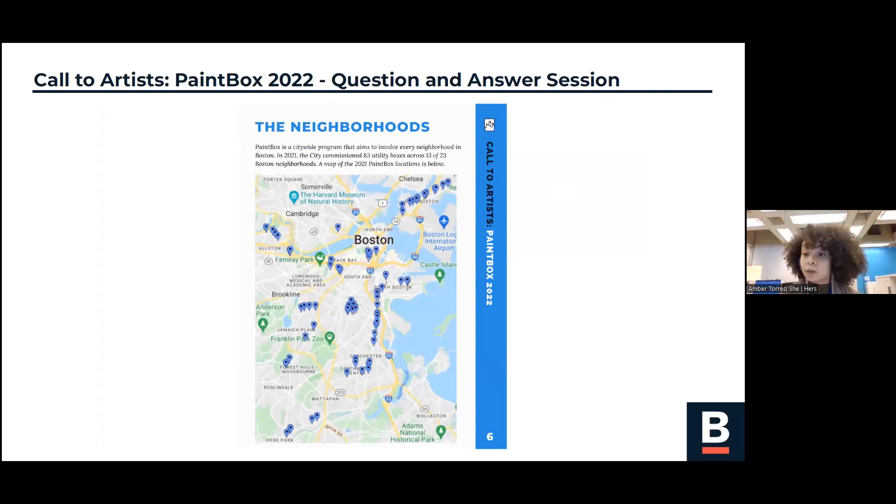Most of our public art projects are neighborhood specific, but Paintbox is a citywide program. We aim to work with every neighborhood, essentially. Last year, we commissioned 83 utility boxes in 13 neighborhoods across the city. You can see the map here on the screen, and it's also visible on our website.